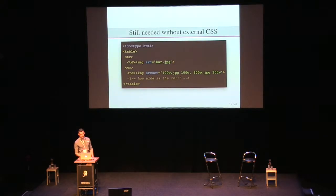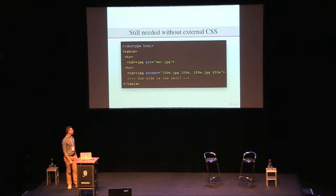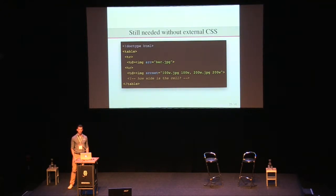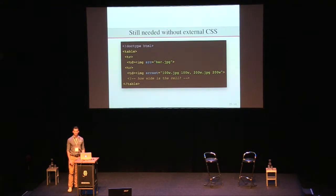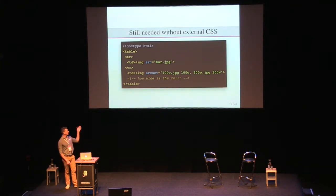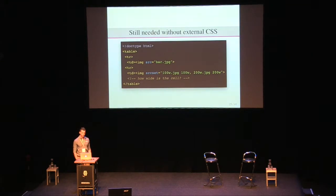But what about if you don't have any external stylesheets either? You would actually still need sizes. For example, with a regular table — tables shrink to fit based on their content. So if you have an image at the top and an image in a later cell, the width of the later cell depends on the first image. Without sizes, the browser would need to wait for the first image to download before it can start downloading the second image. But with the sizes attribute, we can give it a heads up and say: this is my intended size for this image.